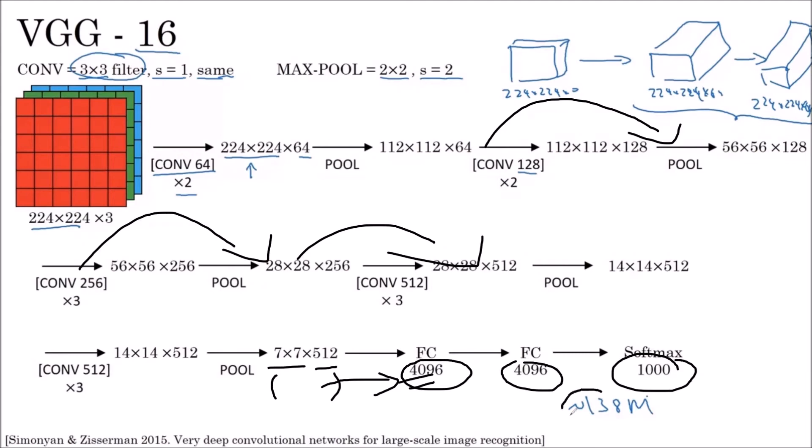In this VGG-16 net, we have to calculate and update 138 million parameters. This number is very large compared to AlexNet. In AlexNet, only 60 million parameters are there, whereas in LeNet-5, only 60,000 parameters.